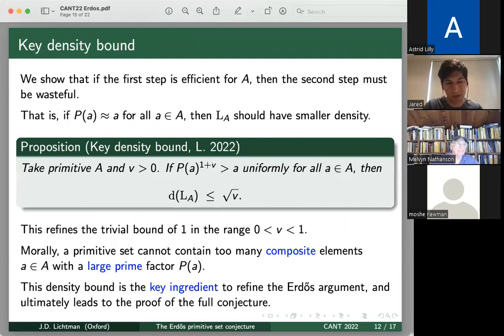But then the question is, what about the case where A contains composites? So for the sake of time, I only give kind of a brief description of what's going on. But the main idea is that we show that if the first step above is efficient for A, then the second step must be wasteful. So that is to say, if P(a) is approximately a, then we should get a savings on this density. And specifically, if we have the inequality that P(a)^(1+v) is at least a, then we get a bound on the density by the square root of v. And this bound is a refinement of the trivial bound of one, at least when v is in the range between zero and one. And so this density bound is the key ingredient to refine the Erdős argument and ultimately leads to the proof of the full conjecture. And morally speaking, this density bound is saying that a primitive set cannot contain too many composite elements with all large prime factors.